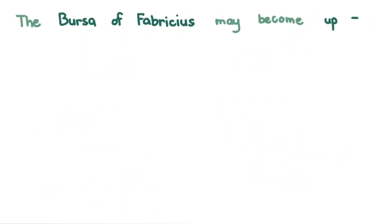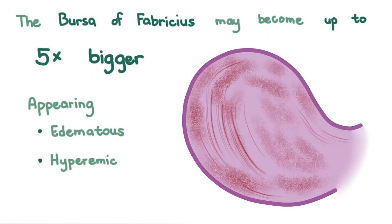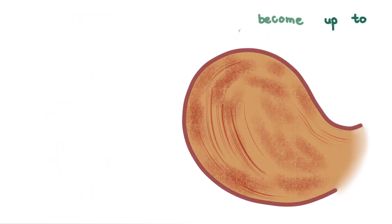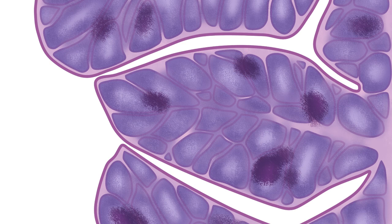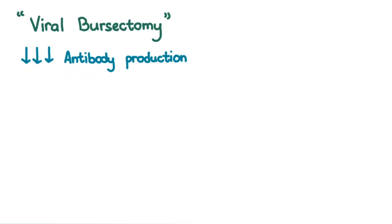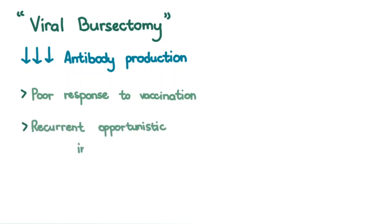The Bursa of Fabricius can become up to five times bigger from the inflammation, appearing edematous, hyperemic, and yellowish. B lymphocyte destruction leads to the collapse of the normal follicular structure of the bursa and multiple foci of necrosis throughout the bursa. This has been called a viral bursectomy, because just like in surgically bursectomized birds, there is a significant decrease in the chicken's ability to produce antibodies. This also results in poor response to vaccination, recurrent opportunistic infections, and more severe illness when infected with common diseases.